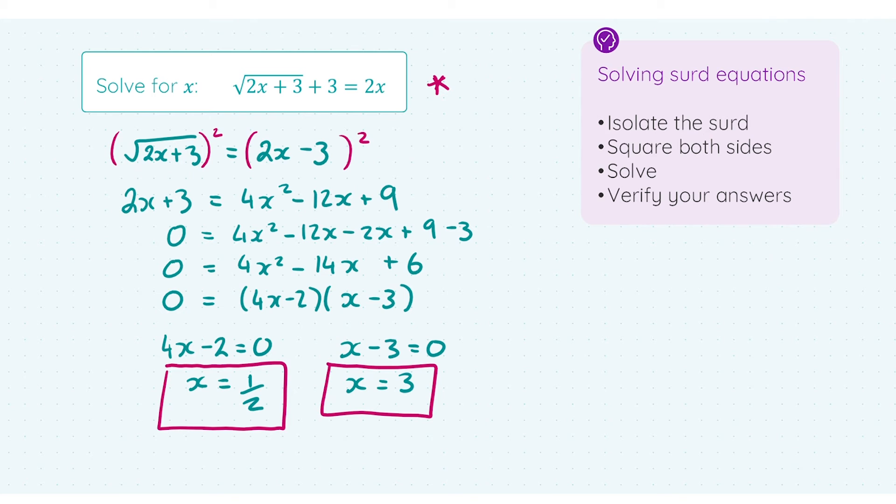So over here on the side, let me take x equals 1 half, and check if that works out. So is the square root of 2 by 1 half plus 3 plus 3 equal to 2 times 1 half? Well, if we work out the left-hand side, we get 5. And is 5 equal to 2 times 1 half, which is 1? No, it is not. So x equals 1 half is not a solution.